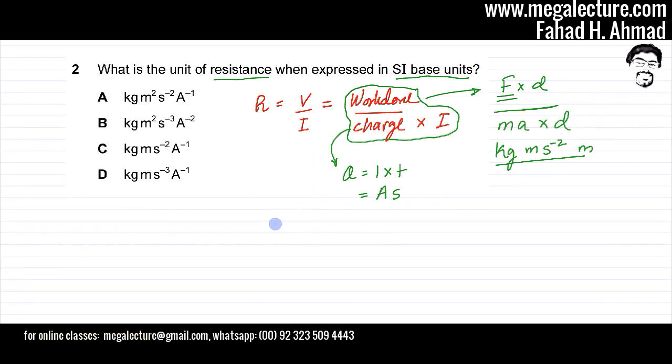My resistance unit, if I derive it in base units, it's going to be work done which we derived as kg m s minus 2 into m, or we can call that as kg m squared s minus 2 because there are 2 ms in the expression. The bottom is charge into current which is ampere second into current again, so that's ampere second into ampere, so that's ampere squared into seconds.